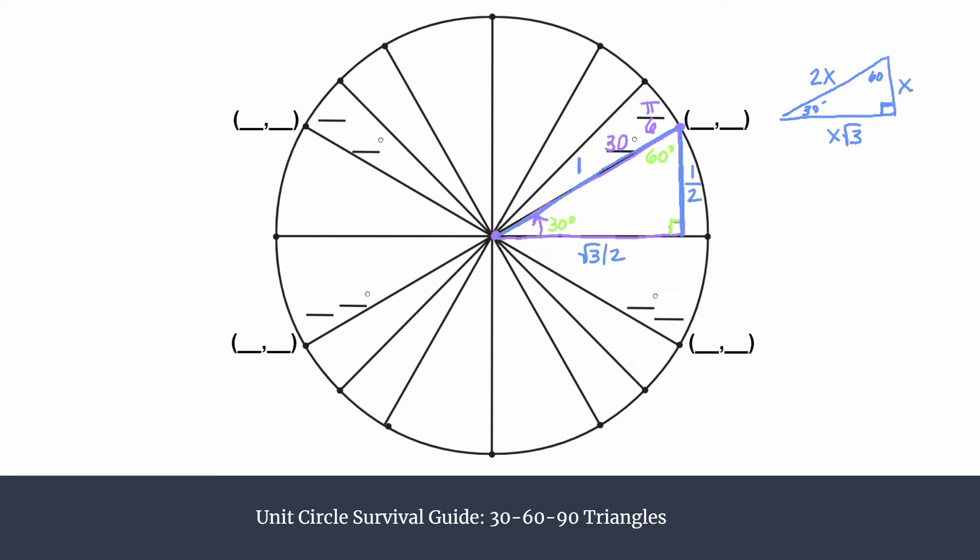So now we can easily fill in this ordered pair because we know that if we move from the origin to the right along the longest leg, we're going a distance of square root of 3 over 2. And that's about 0.87 if you were looking at it as a decimal. And then you're moving up 1 half. So we can label this. The x is the square root of 3 over 2 or the length of the long leg. And the y-coordinate is 1 half or the length of the shorter leg.